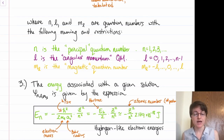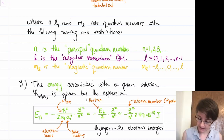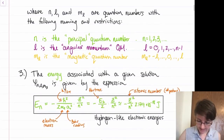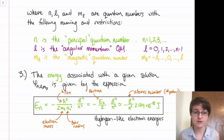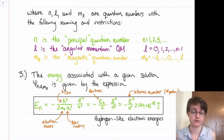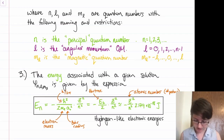So if l equals 2, m_l could take on values negative 2, negative 1, 0, 1, or 2. The energy associated with a given solution to Schrödinger's equation — wave function psi_{n, l, m_l} — is given by a specific expression. I've written it in a couple of different ways: both as a formula with physical constants and as numerical values for practical computation.